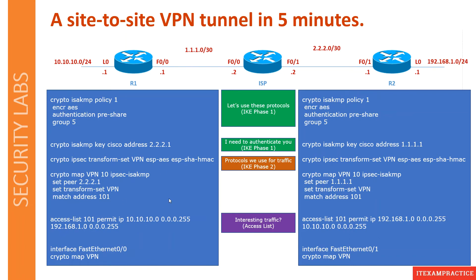The next step is interesting traffic. In my opinion, this is the most important step and I have seen a lot of issues with it, so please focus because this is something that can go wrong. Interesting traffic means an access list — source and destination of our private IP addresses. On R1, the source is 10.10.10.0 and the destination is 192.168.1.0. On R2, the source is 192.168.1.0 and the destination is 10.10.10.0.